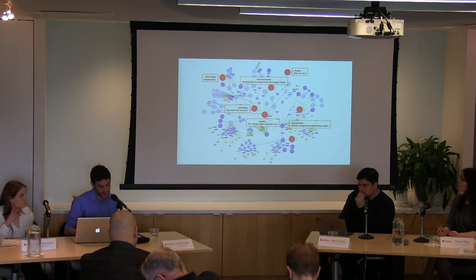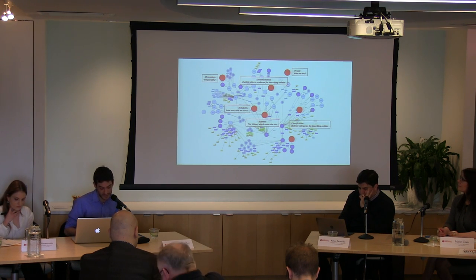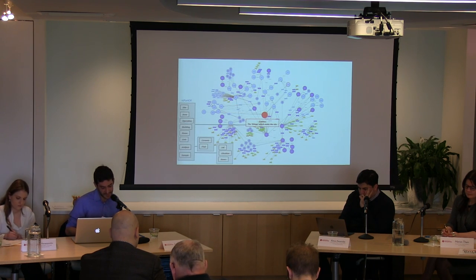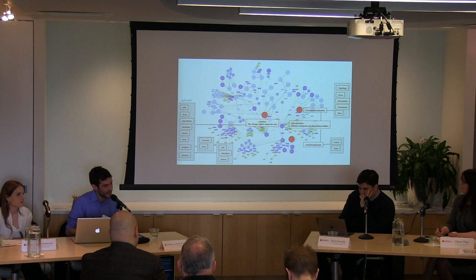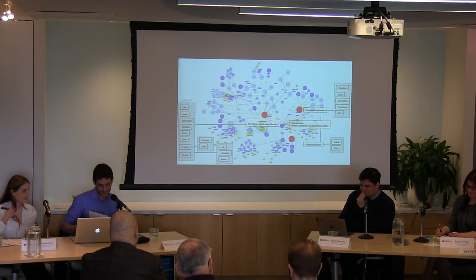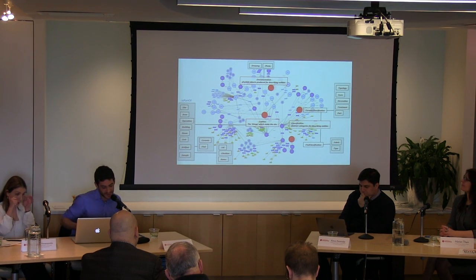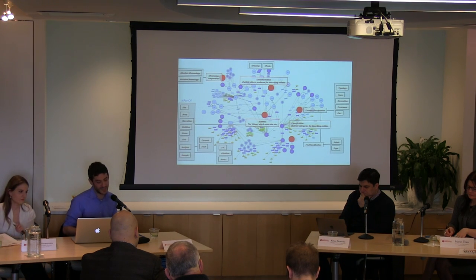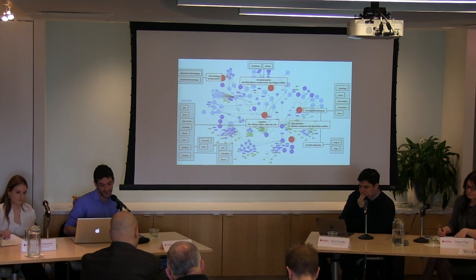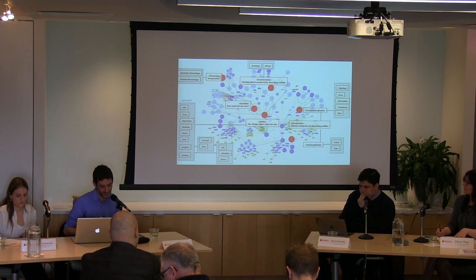Without going too deeply into archaeological jargon, from a conceptual point of view our ontology is based on the distinction of six major categories. First, entities — everything that is three-dimensional in nature: the site, the areas, the trenches, the stratigraphic units, the artifacts, and so on. Second, the classification — all the abstract concepts we use to classify and describe in a normative way single entities, such as the shape of a vessel, the decoration, and so on. Third, the documentation — all documentary objects that we archaeologists create in the field, such as photos and drawings. Fourth, the chronology — the absolute dating of finds and relative position in the site stratigraphy. Fifth, the reliability — how certain we are about what we are saying. And finally, the people — us, running the project.